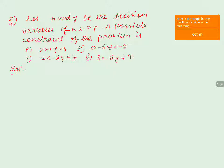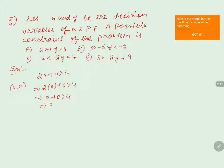Looking at option 1, the possible constraint is 2x plus y greater than 4. Substituting the origin (0, 0): 2 into 0 plus 0 greater than 4, which gives 0 greater than 4. This is false, so the origin does not lie in this region. Option 1 is eliminated.